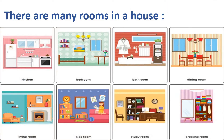There are many rooms in a house and those rooms are shown on your screen. First is kitchen — the room where food is cooked. Your mamma goes to the kitchen to cook food. Next is bedroom, where we rest and sleep.